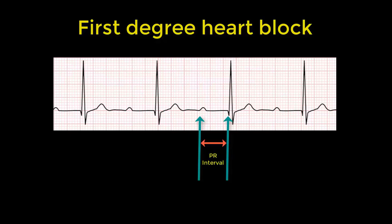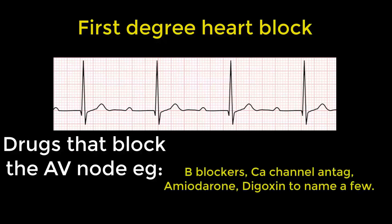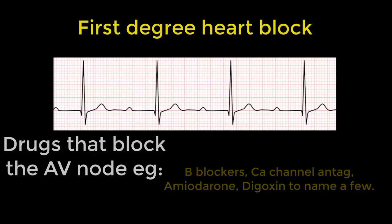But in first degree heart block, it's longer than five small squares, as we can see here in this example. It may be normal, but can also be seen in a number of different conditions. It can occur with drugs that block the AV node — drugs like beta blockers, calcium antagonists, amiodarone, or digoxin.